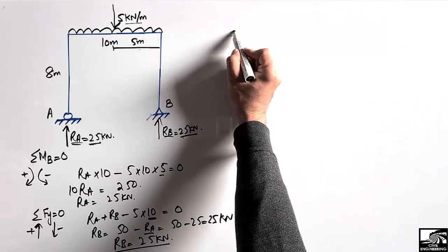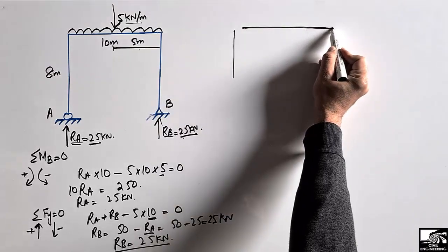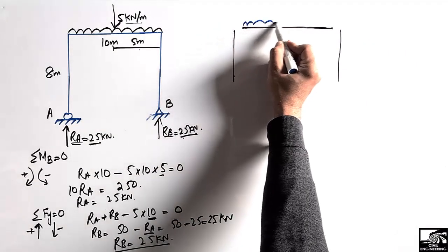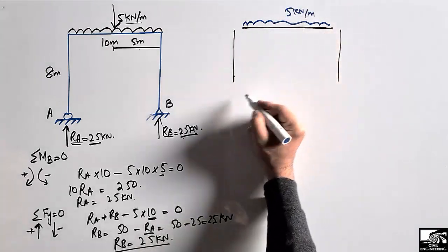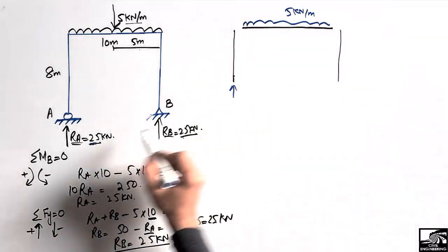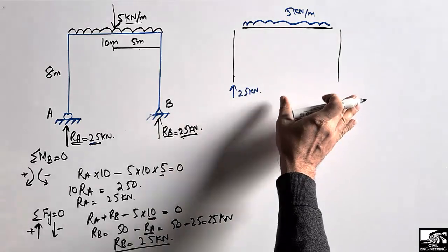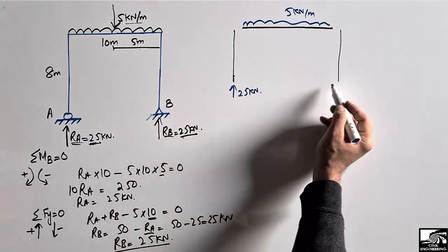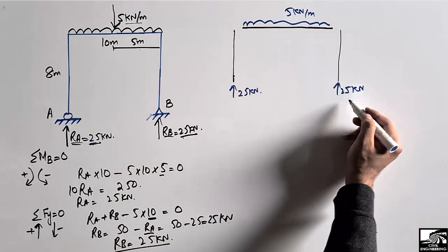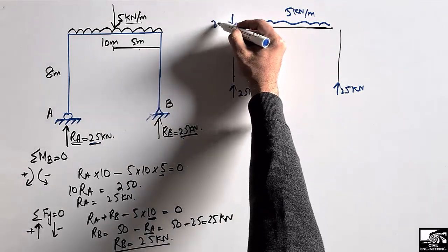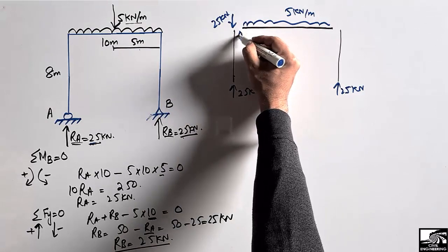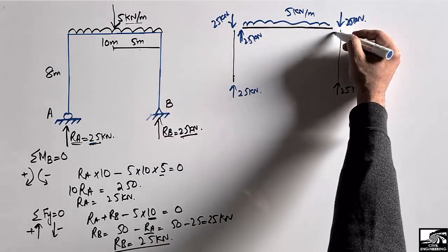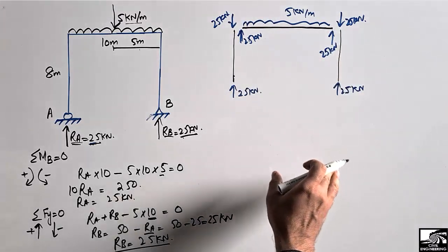To draw the shear force and bending moment diagram, we first draw the free body diagram. The frame has two columns and one beam. We place the 5 kilonewton per meter load on the beam, with R_A = 25 kilonewton at the left column base. This 25 kilonewton is transferred up to the top of the left column, then to the left end of the beam, and similarly 25 kilonewton is transferred up through the right column to the right end of the beam.